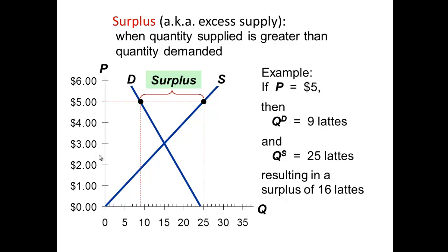When we are in disequilibrium, one of two things are going to happen. We will, in the market, experience either a surplus — which is excess supply — or a shortage, which is excess demand.